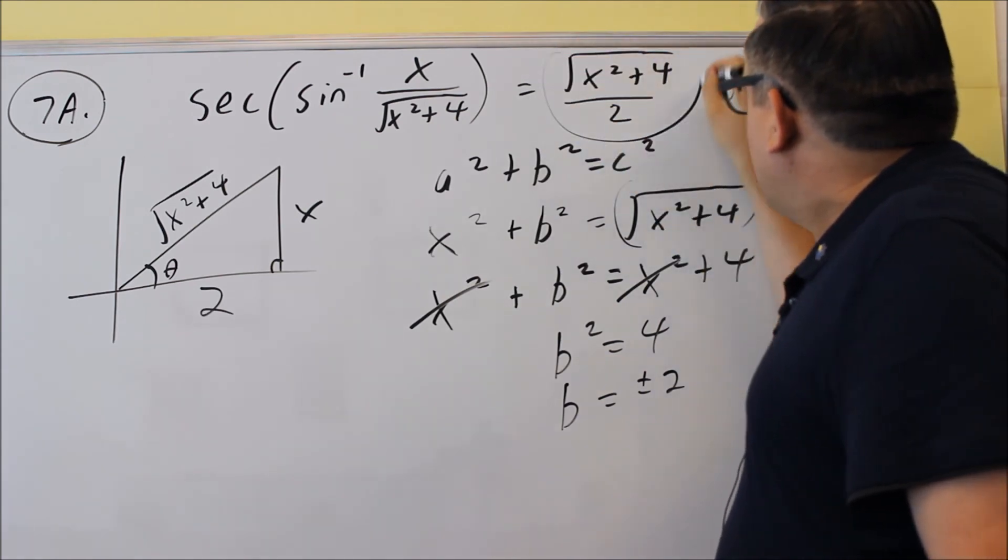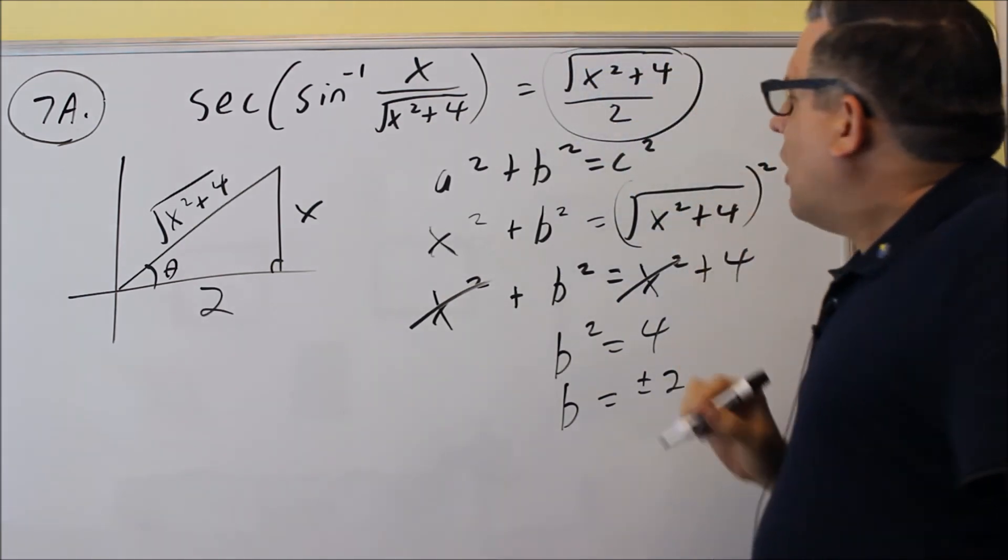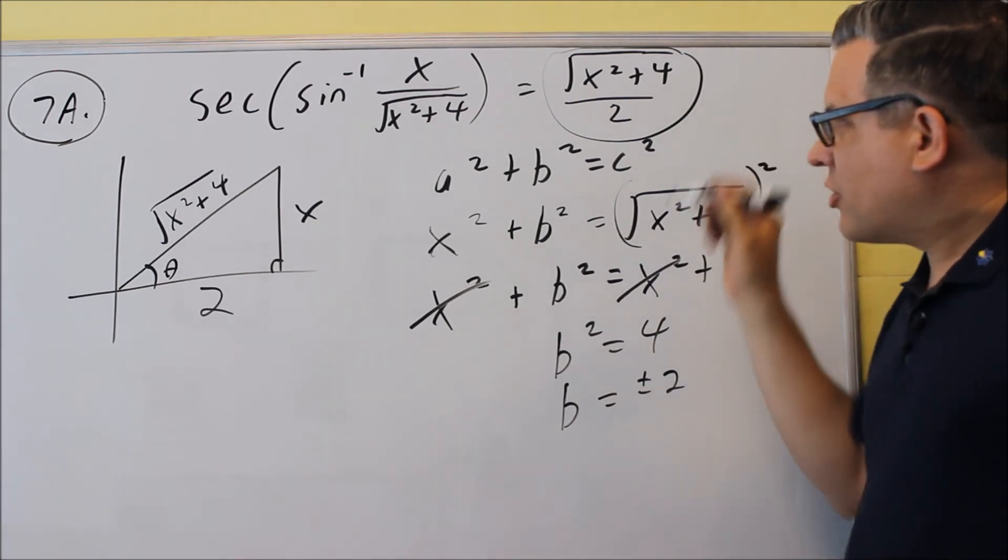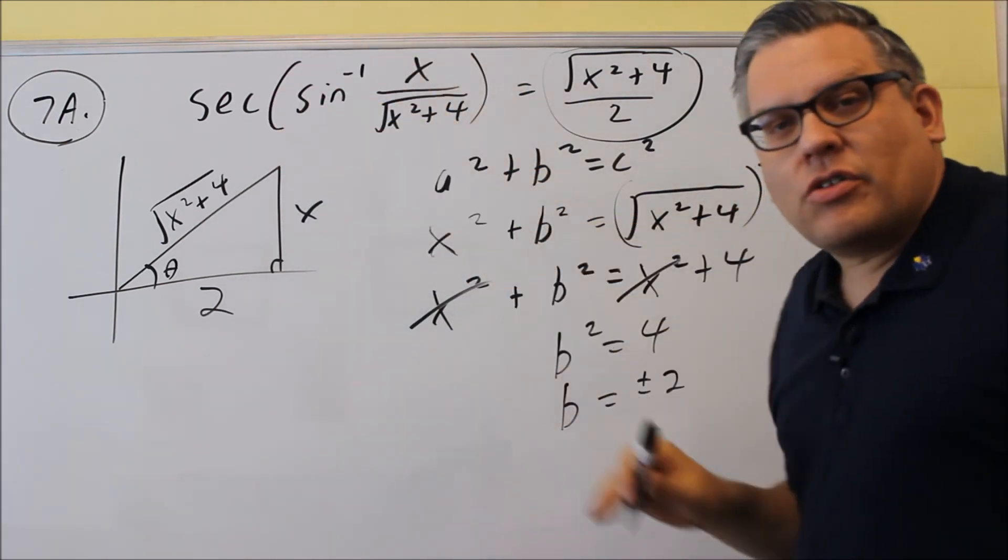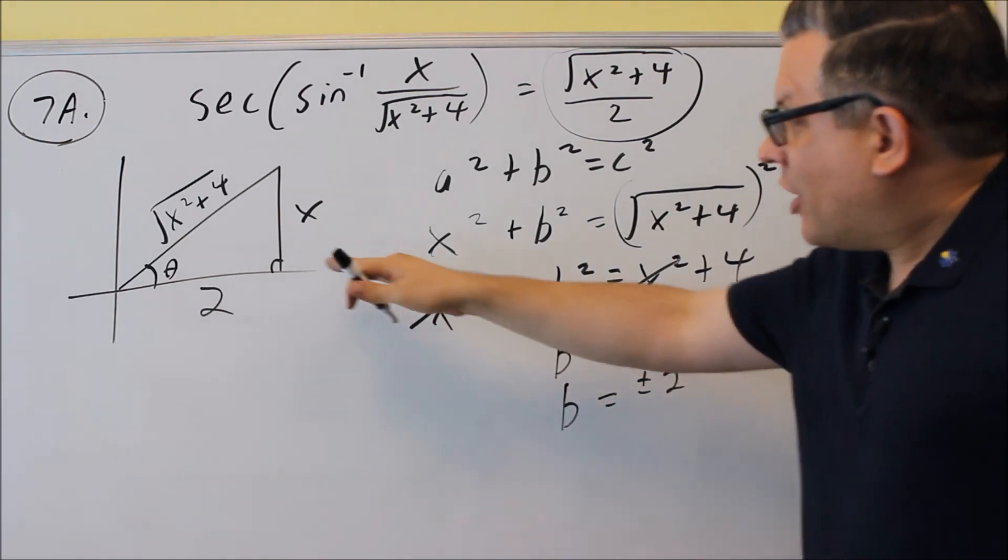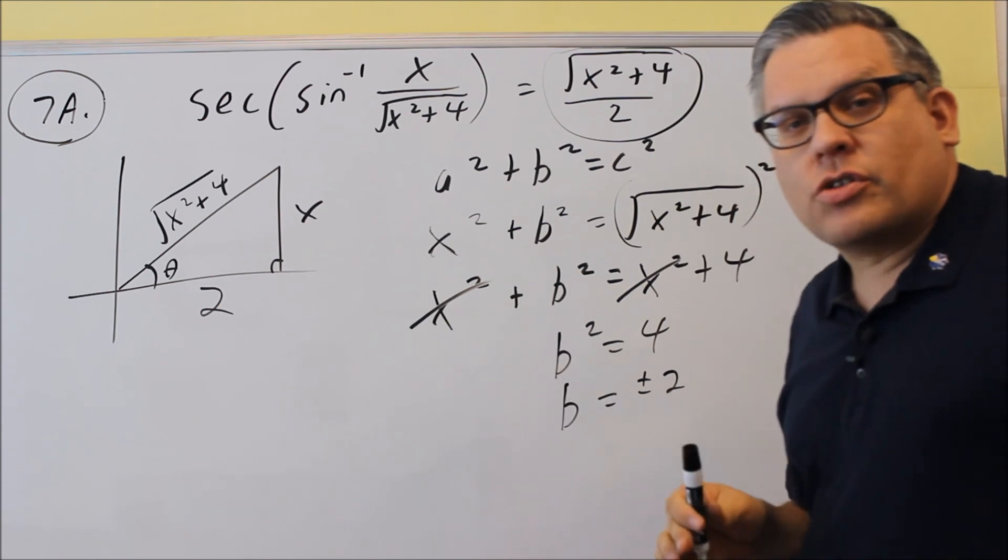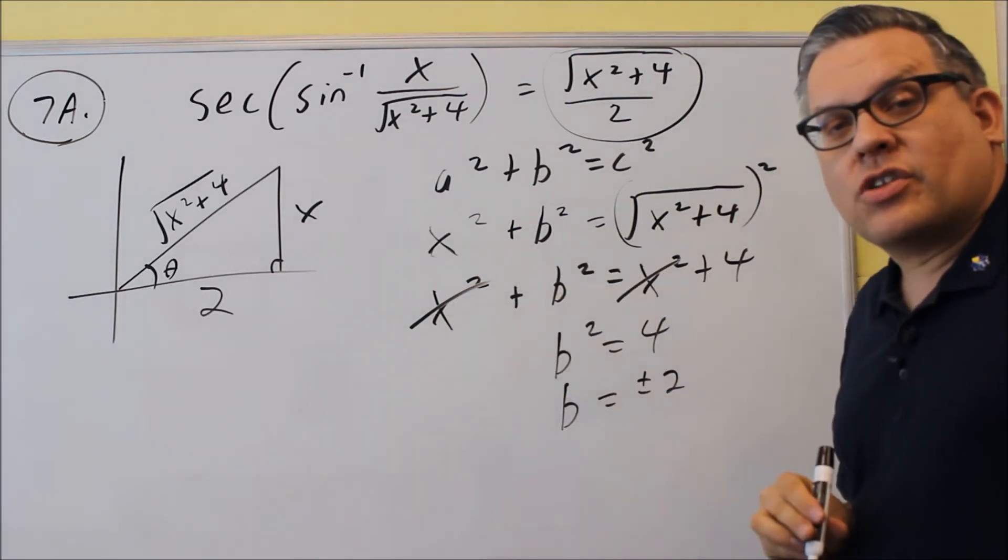So this right here, this answer right there, that's going to be what you would put as the answer for the whole entire problem. It's an algebraic expression that's equivalent to this that you have here. So we got that again by reading it directly off the triangle using the definition for secant, which is hypotenuse over the adjacent. This is the answer.